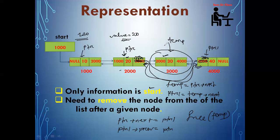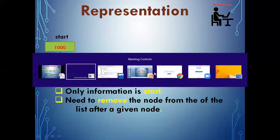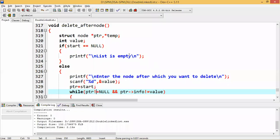The connection from 4000 back to 2000 is also established, so the reverse connection is set up. After that, I simply use free(temp) so that the entire memory block of 3000 is deleted from the list. The same procedure discussed in single linked list is followed here in doubly linked list.